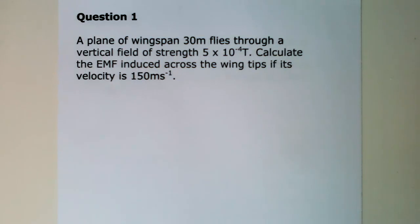So here, a plane flies through the magnetic field, and we are asked to find the EMF induced across the wingtips. Well, to do this, we need to calculate the area swept out each second by the wings, multiply that by the field strength B, and you have got the flux swept out in a second.